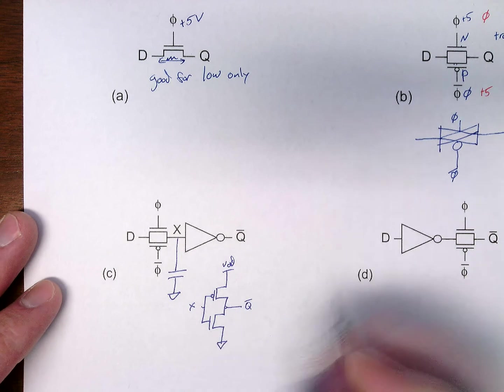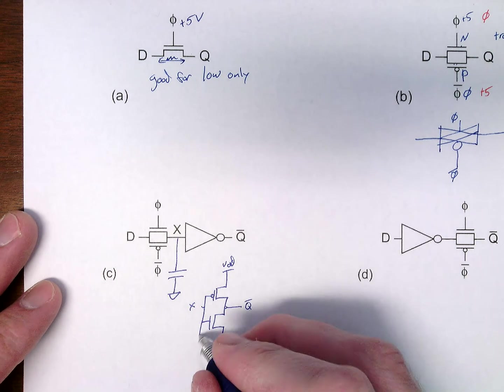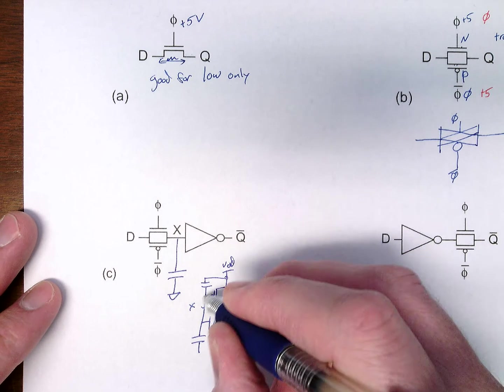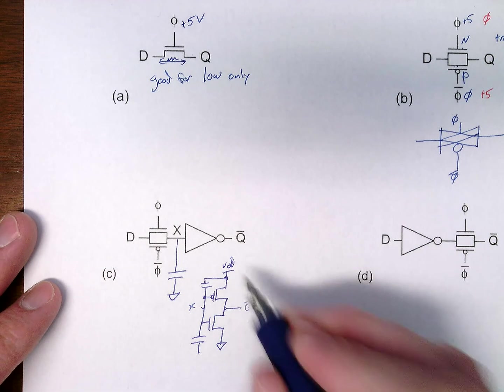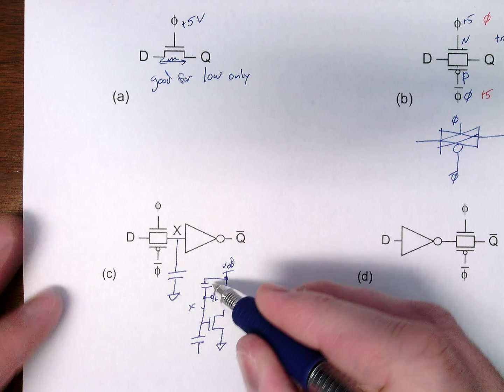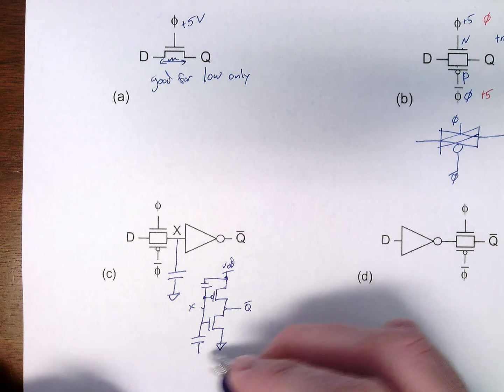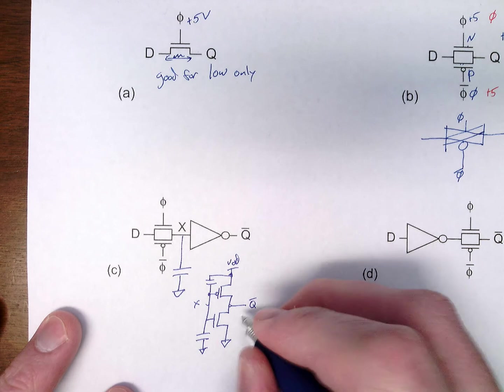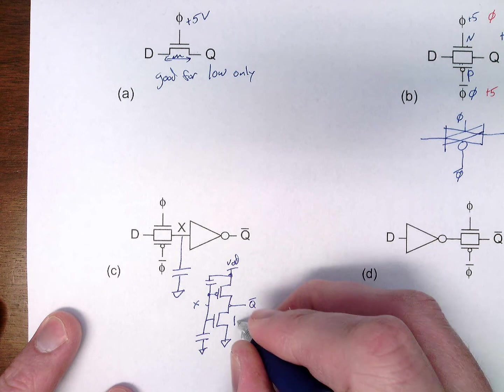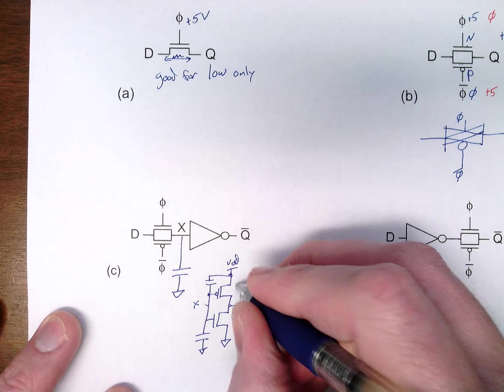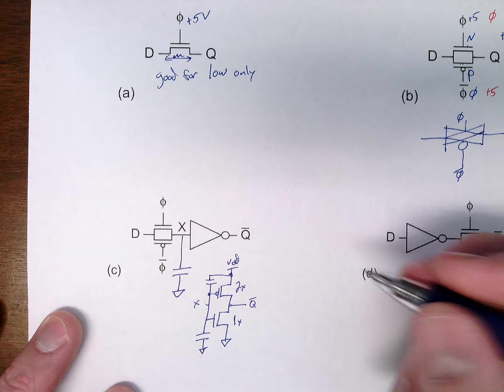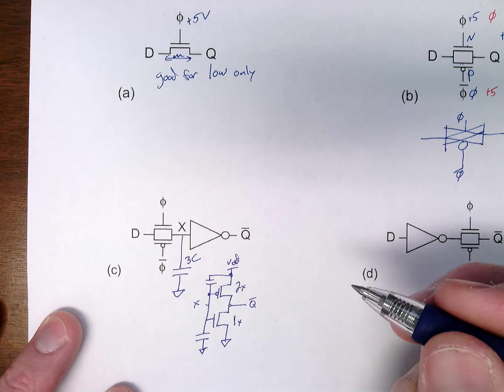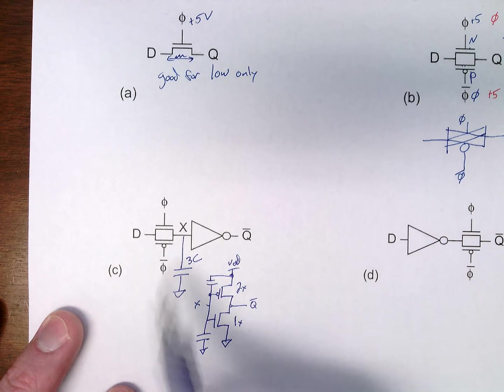Every transistor we have has a gate capacitance. This also has a gate capacitance. Here, remember if we do an AC equivalent circuit, these two capacitors end up in parallel. If this transistor is 1X wide, and this transistor is 2X wide, which is our standard sizing, then the total capacitance here would be 3C, and you've seen the 3C before.